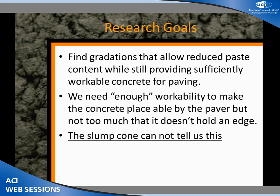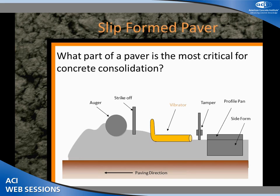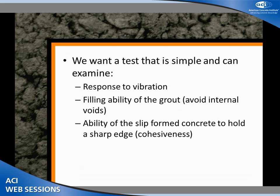The slump test tells us nothing at this really low slump concrete — it just tells us the slump. So if we think about a slip form paver, what part of the paver is doing all the work? It's all about the vibrator. The vibrator is putting all this energy inside our concrete pavement. If we can mimic this action of the vibrator, we have an idea to mimic how a concrete paver works without buying one — a laboratory way to look at concrete pavement mixtures.